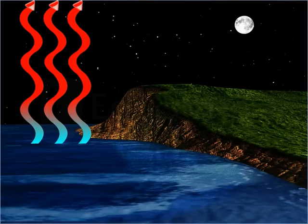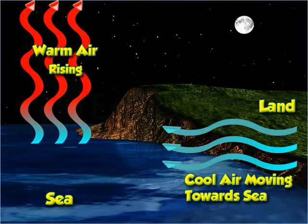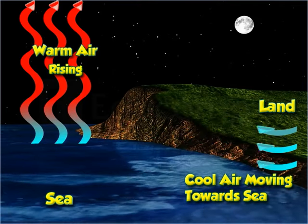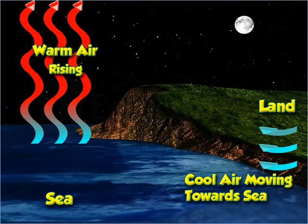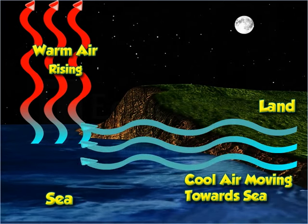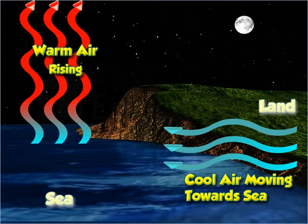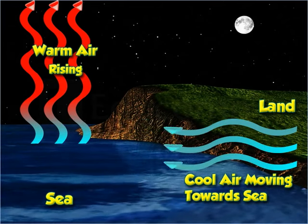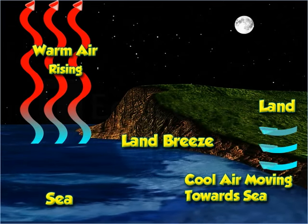At the same time, the cool air over the land moves towards the sea to take the place of the warm air. Thus, wind blows from land to sea. Such winds are dry and are called land breezes.